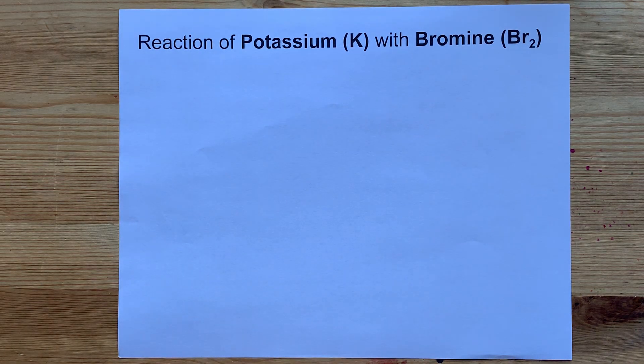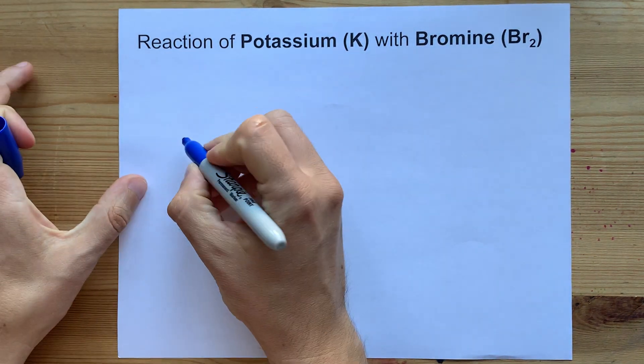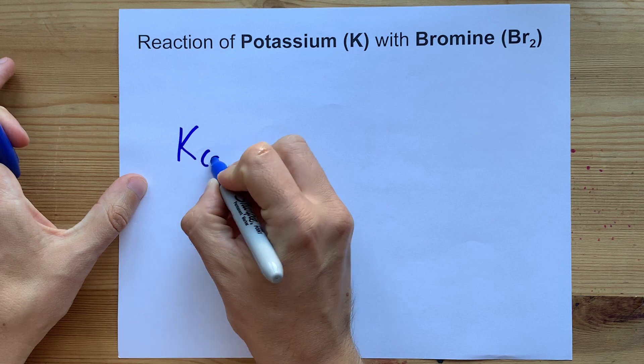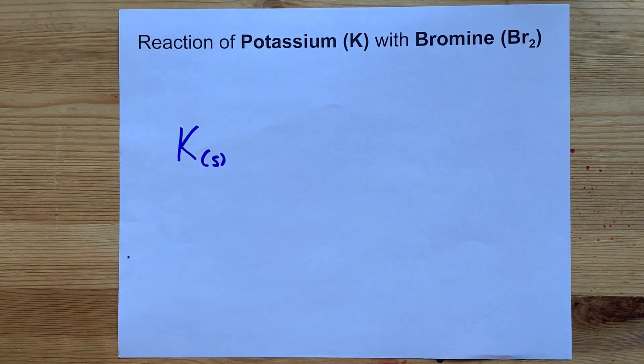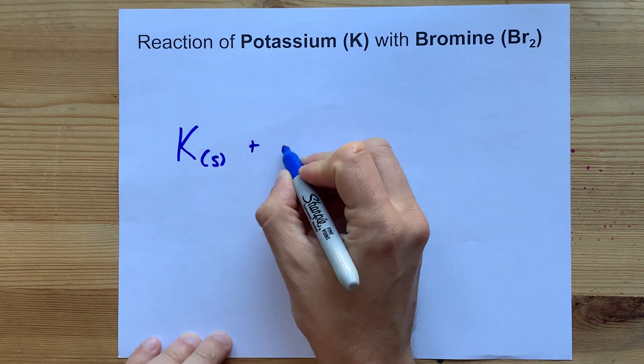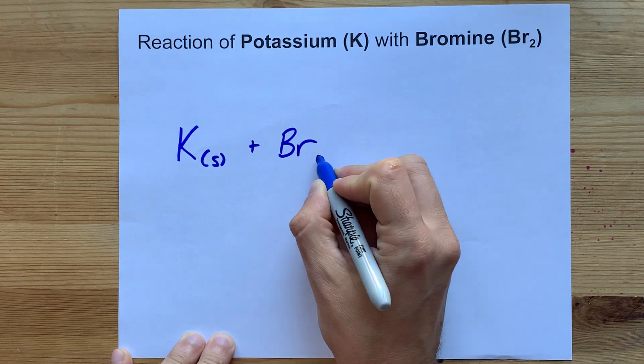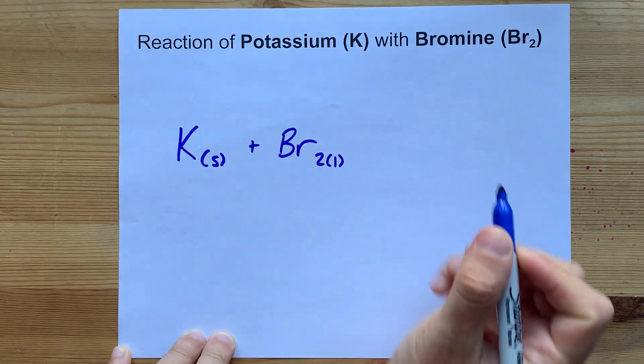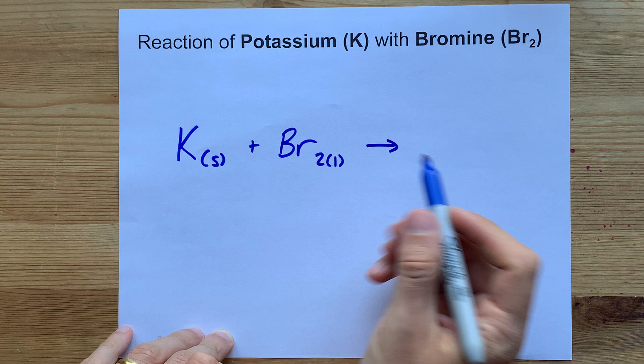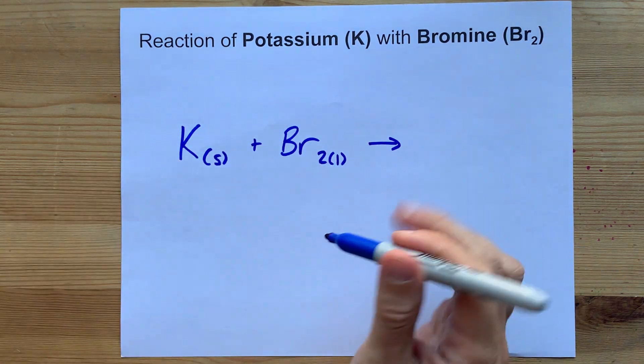This will be one of the easier reactions you get asked. This is an alkali metal, potassium, which is a solid at room temperature, reacting with bromine, a halogen, which is a liquid at room temperature, reacting to form something.